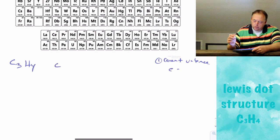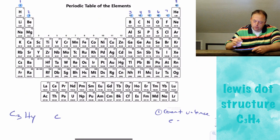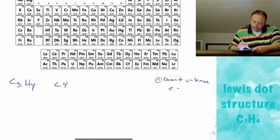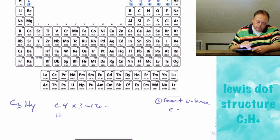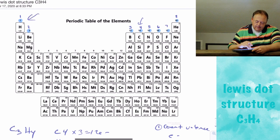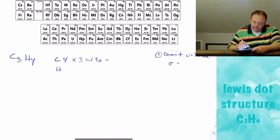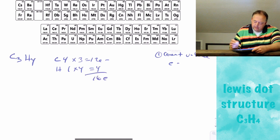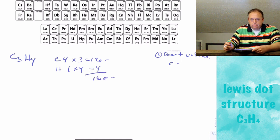Carbon is in group 4, so it has 4 valence electrons, and there are 3 carbons, giving us 12 electrons. Hydrogen is in group 1, so it has 1 valence electron. There are 4 hydrogens, giving us 4. So we have 16 electrons total to build the molecule — whatever structure you draw must have exactly 16 electrons.